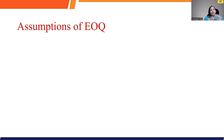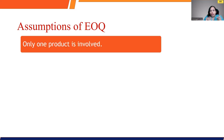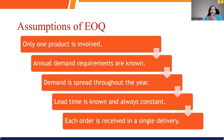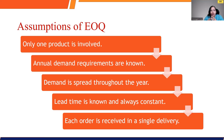To use economic order quantity, there are certain assumptions. Without these assumptions, you will not be able to use the EOQ model. Only one specific product is taken into consideration for calculation. You will have an annual demand requirement which is known. The lead time — the time taken between placing the order and receiving the order — is going to be constant. The demand is spread throughout the year; it's not like a seasonal product. The delivery will be received in a single lot for every order.